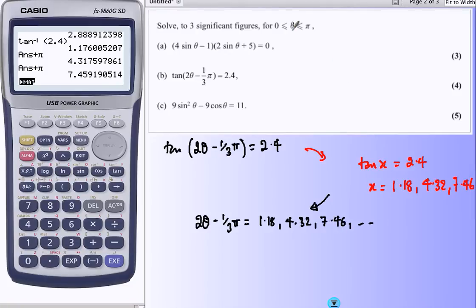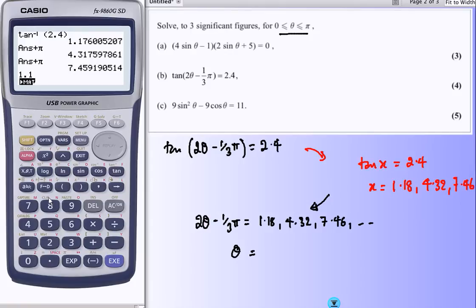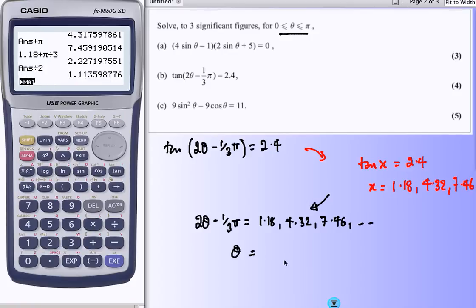And we go as long as we need to. These are quite big. But to get back to this, we need to think θ equals. So we add on π/3, divide by 2, and we should get it. So 1.18, add that π/3, and then divide by 2, 1.11.